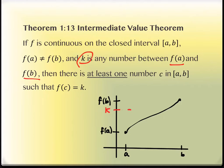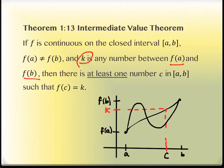Visually from our picture, if we were to trace over and down, this would be the C value that we're referencing in the theorem. The reason it says 'at least one' is because the diagram could have looked like this — it could have crossed through multiple times. If that were the case, there would be multiple places where F of C actually equals K. That's all the Intermediate Value Theorem says: somewhere in there it happened.